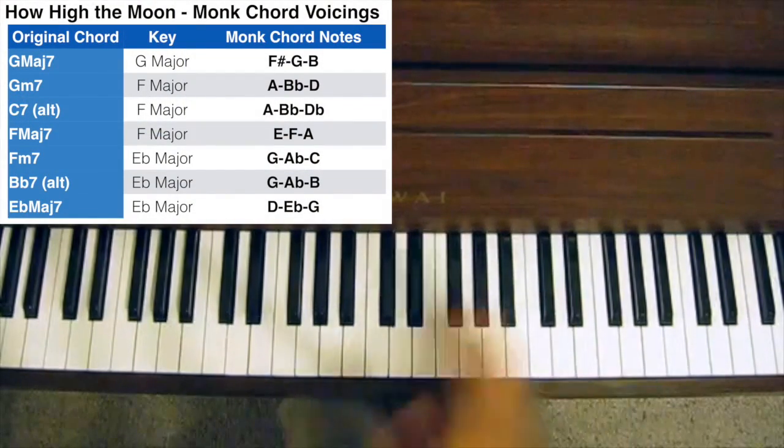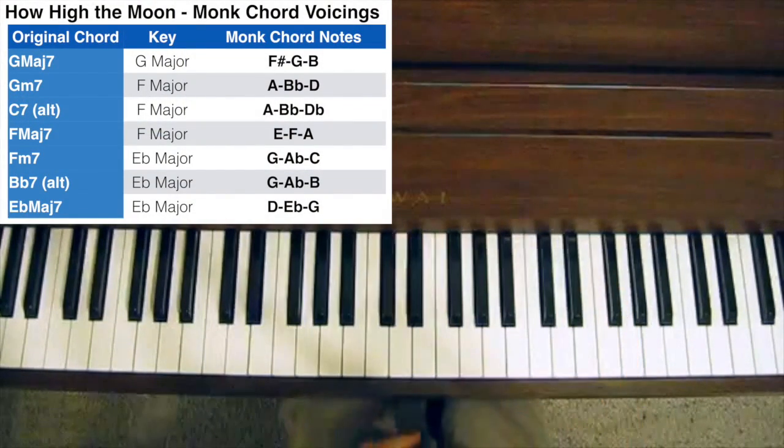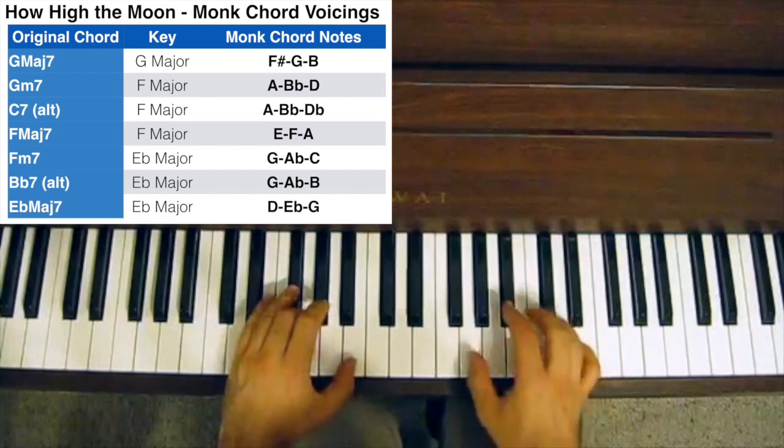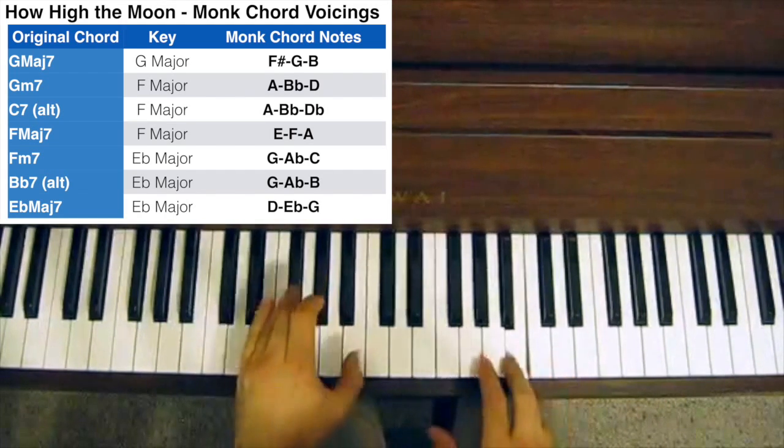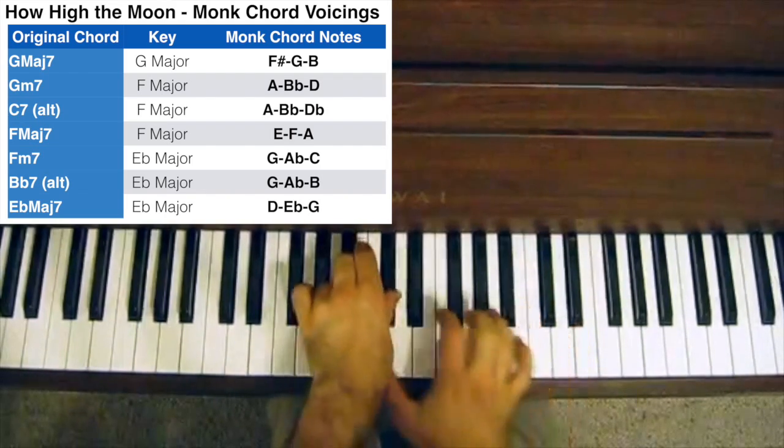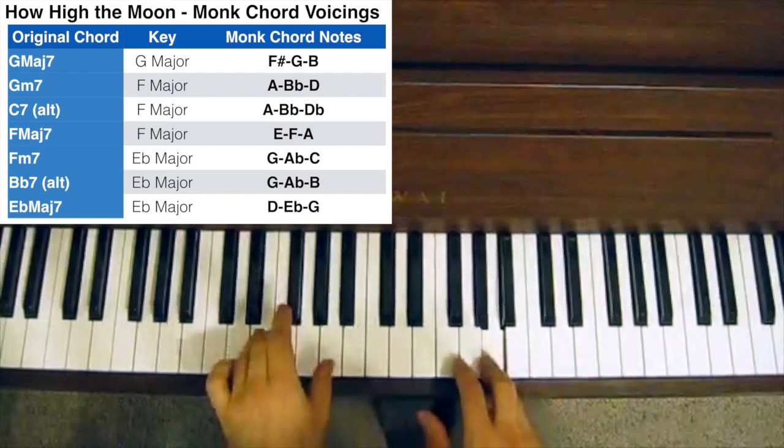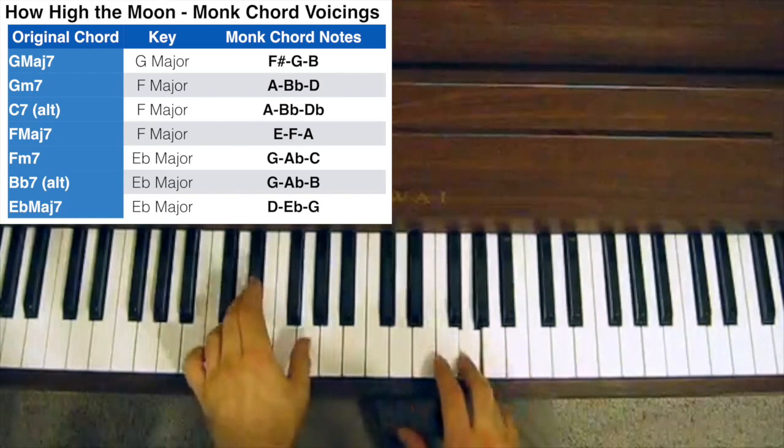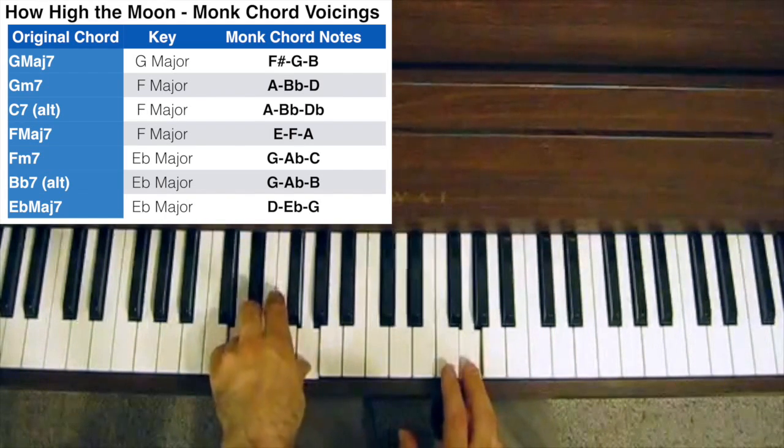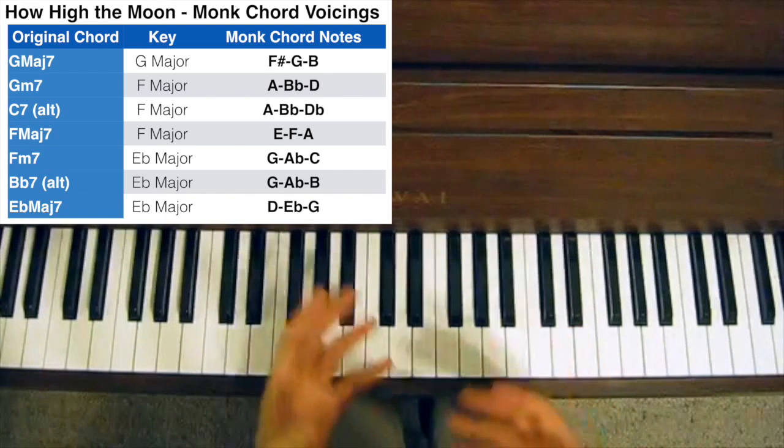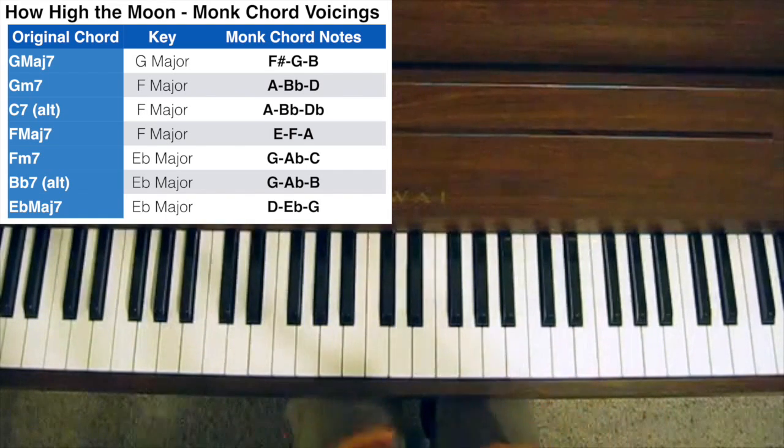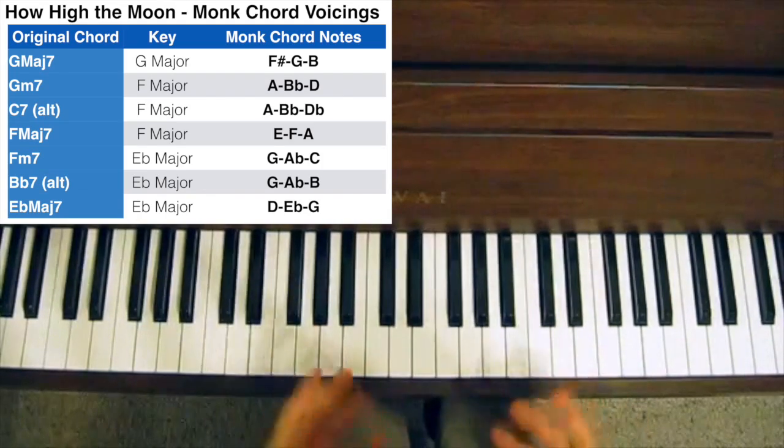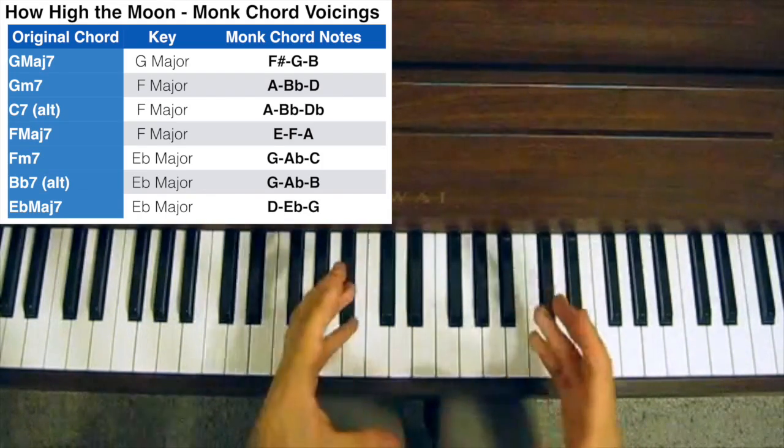And now, if I were to play that same little section A of How High the Moon using Thelonious Monk voicings, it would sound like this. Right, so that sounds really different and really unique. It's quite dissonant. It's quite jarring. It's got a bit of bite to it. It sounds a little bit like Thelonious Monk, but it still fits harmonically.